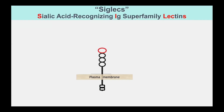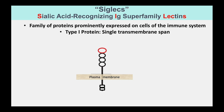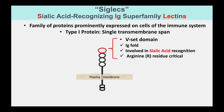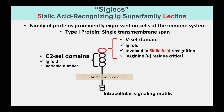So what is a Siglec? A Siglec is a sialic acid recognizing Ig superfamily lectin. These are proteins found on the surface of cells, particularly in the immune system. They're called type 1 proteins because they pass through the membrane one time. At the outer end, they have what's called a V-set domain that binds sialic acid. Below that, there are some C2-set domains which extend the protein down to the membrane, and inside the cell you have intercellular signaling motifs. So this is a molecule that can be seen on the outside and send a signal on the inside.